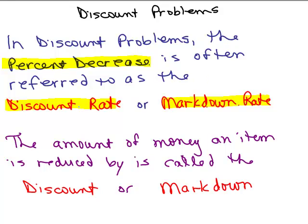The terms we usually see are discount rate or markdown rate. So when you see discount rate or markdown rate, we're referring to the percent of the discount on the original price. Now the amount of money an item is reduced by is called the discount or the markdown. So when it talks about what's your discount, it means how much money did you actually save.